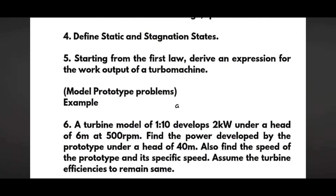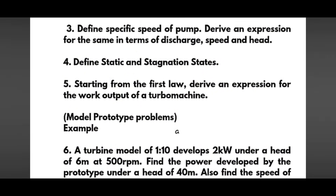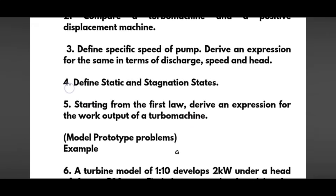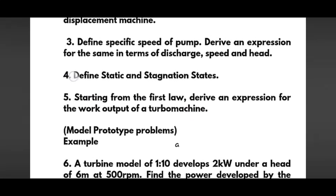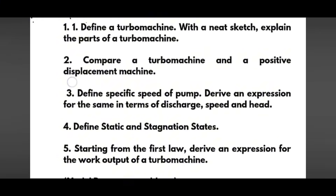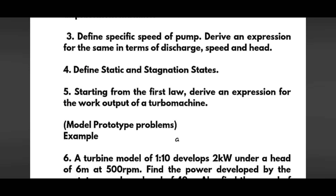Don't worry about the notes — I will provide them in my description box. From Module 1 itself, we can go through only one part. In the next part, we have theoretical questions like define static and stagnation states and derive an expression for the work output of a turbo machine. In the second part, you can go through only one part with the particular problem, that is model prototype problems.